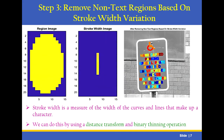The third step is to remove non-text regions based on stroke width variation. Stroke width is a measure of the width of the curves and lines that make up a character. A region of the image is taken, and we apply a distance transform and binary thinning operation. After removing non-text regions based on stroke width variation, we get an output showing the stroke width image and the resulting region image.